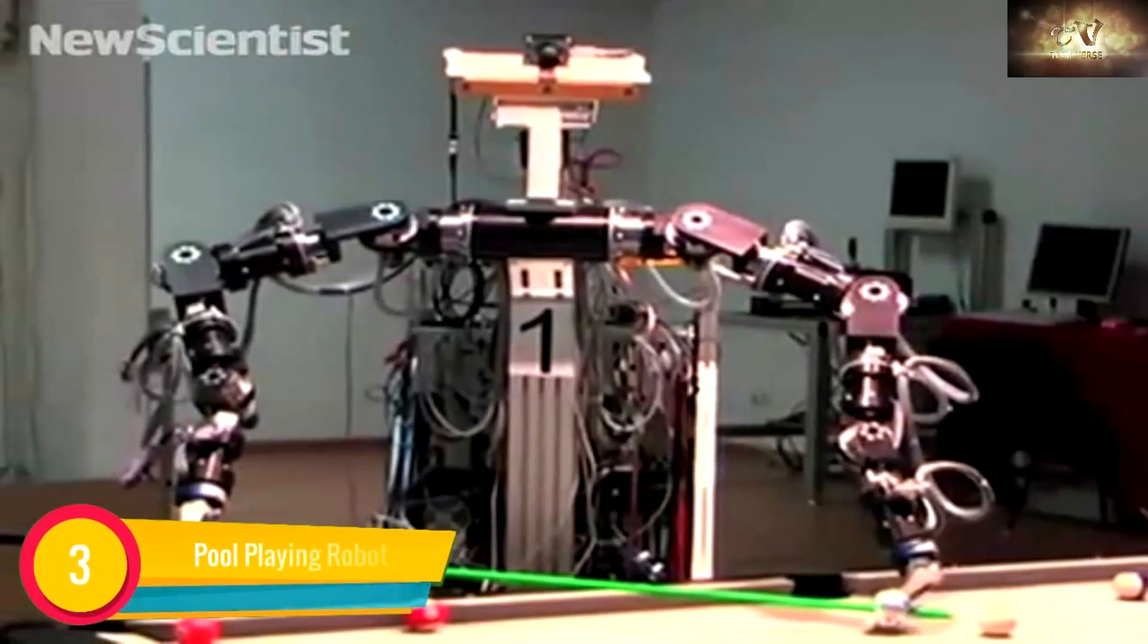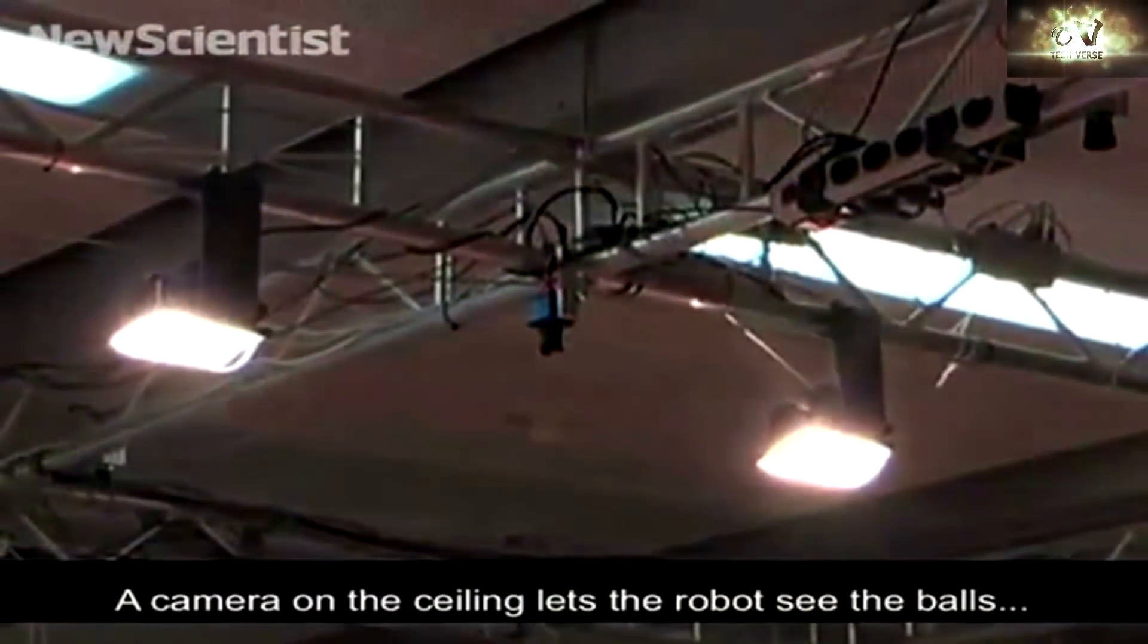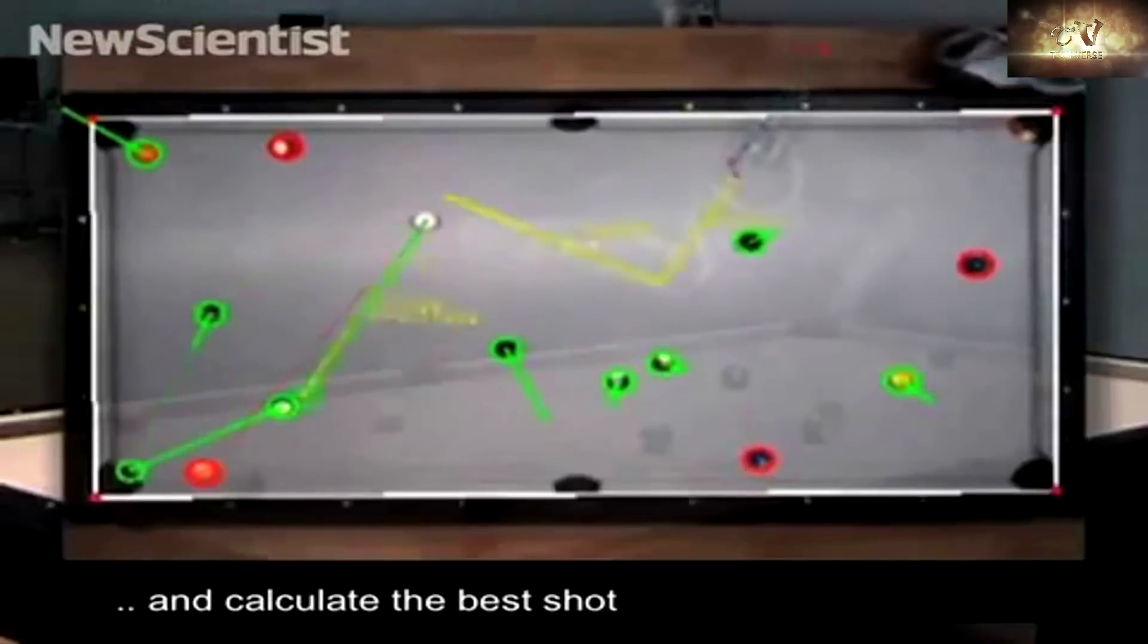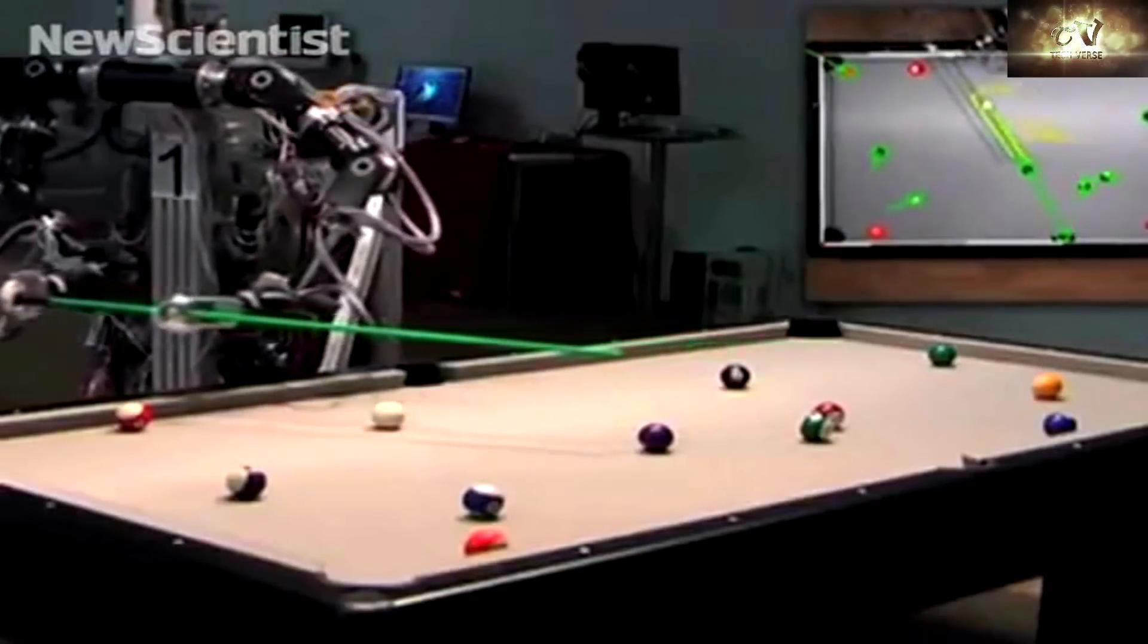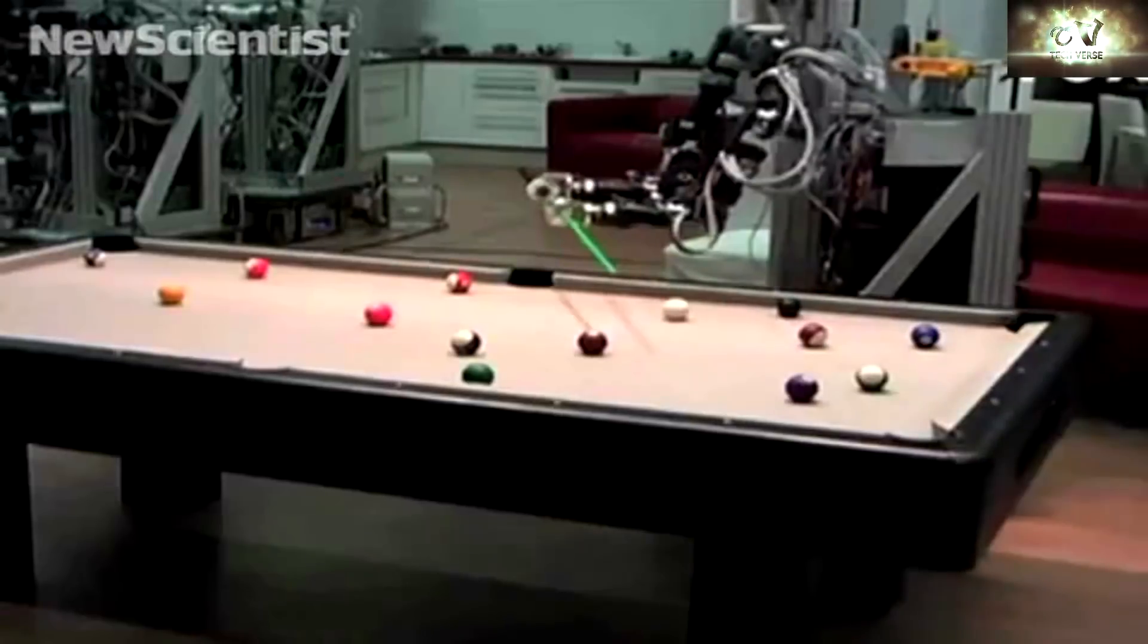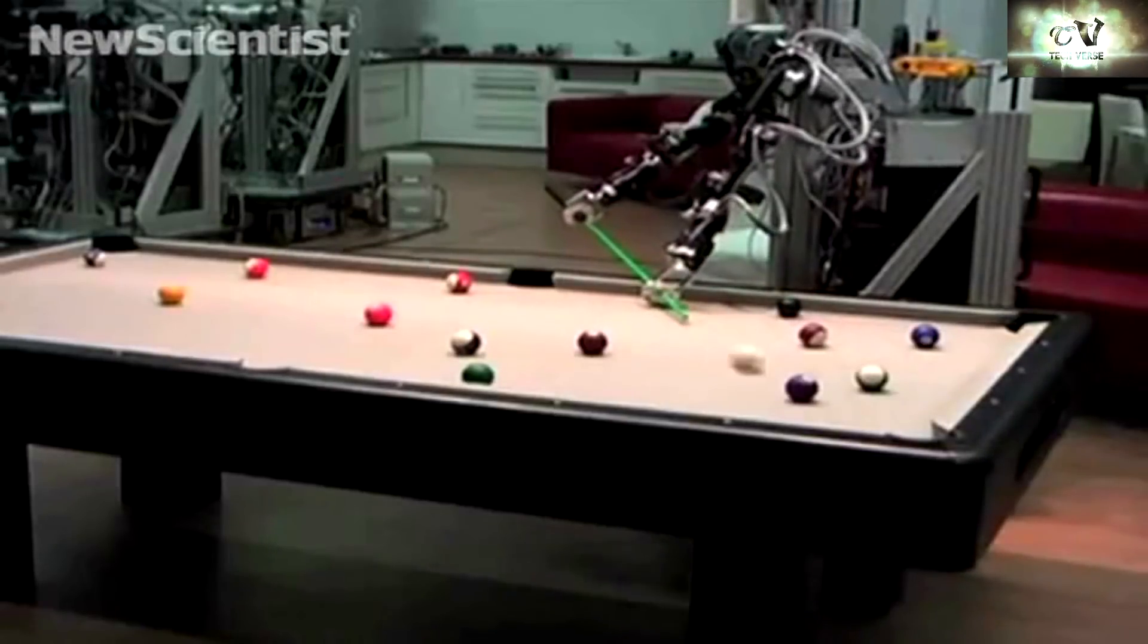Pool Playing Robot. This robot was created by a graduate student in Germany. It has two arms and is connected to a camera at the pool table. With the help of the camera, it carefully ascertains the way billiards are configured.